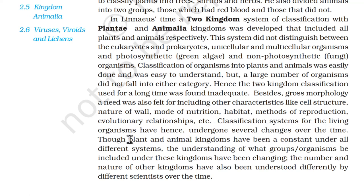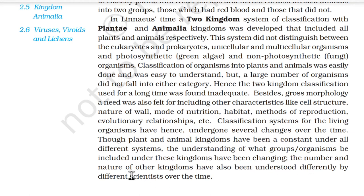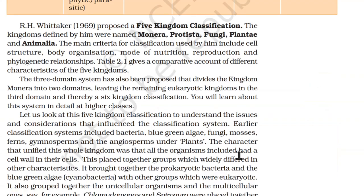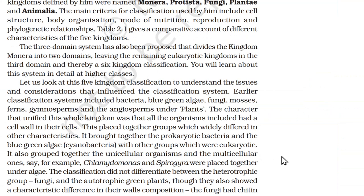Classification systems for living organisms have hence undergone several changes over time. Though plant and animal kingdoms have been constant under all different systems, the understanding of which groups of organisms be included under these kingdoms has been changing. The number and nature of other kingdoms have also been understood differently by different scientists.